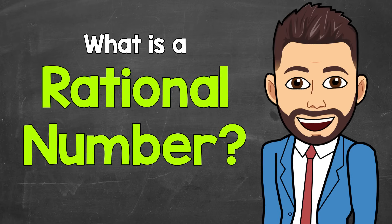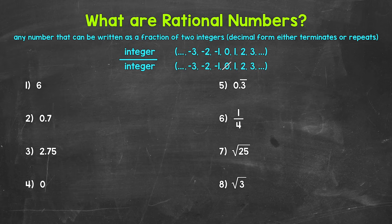Welcome to Math with Mr. J. In this video, I'm going to cover what rational numbers are. Simply put, rational numbers are numbers that can be written as a fraction, specifically a fraction of two integers. So the numerator must be an integer and the denominator must be an integer.